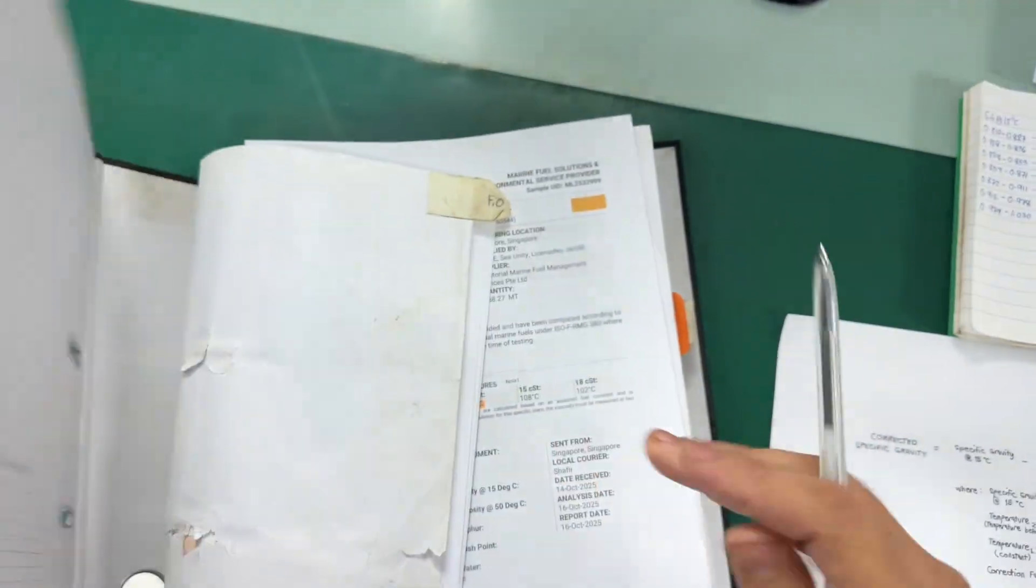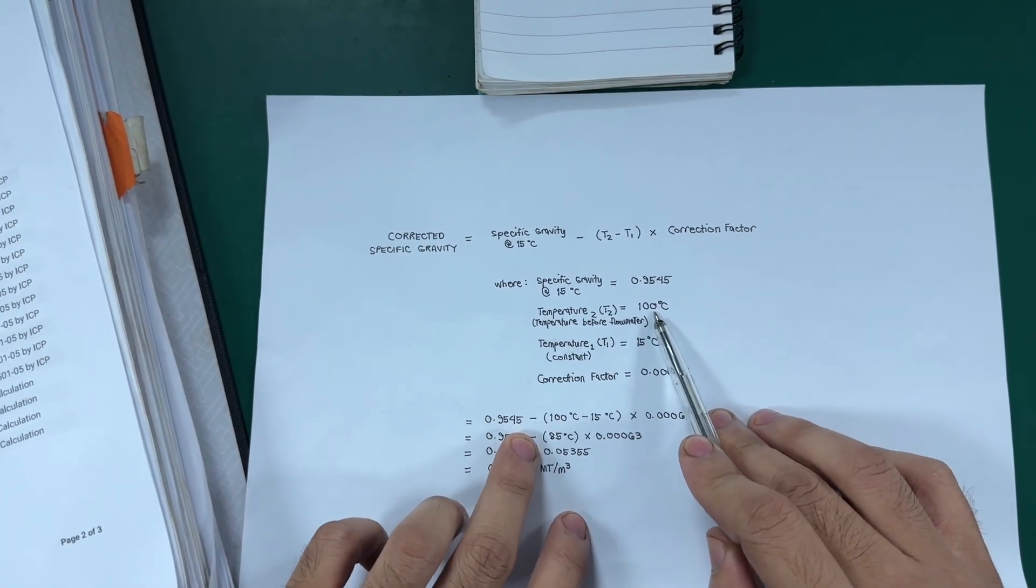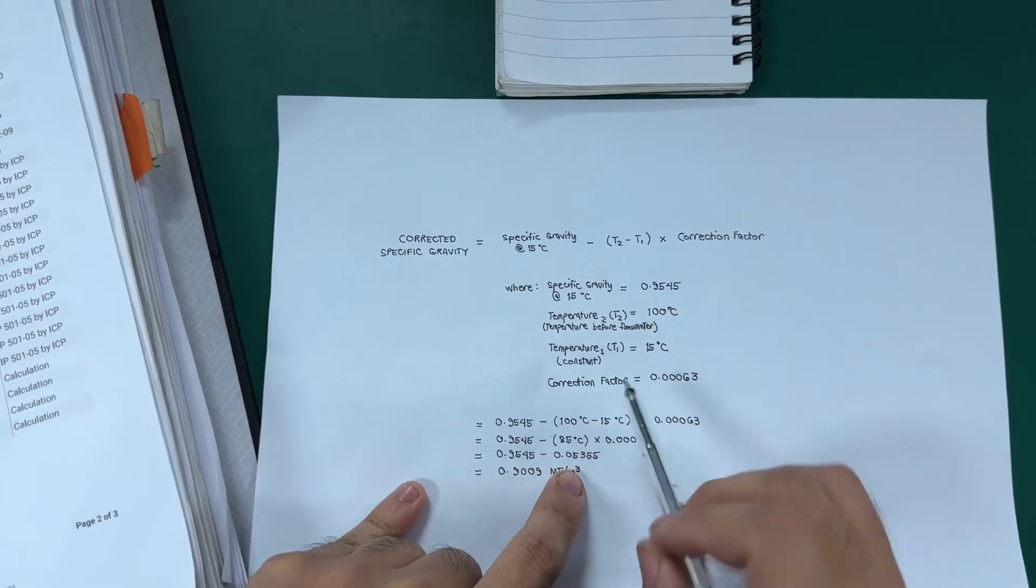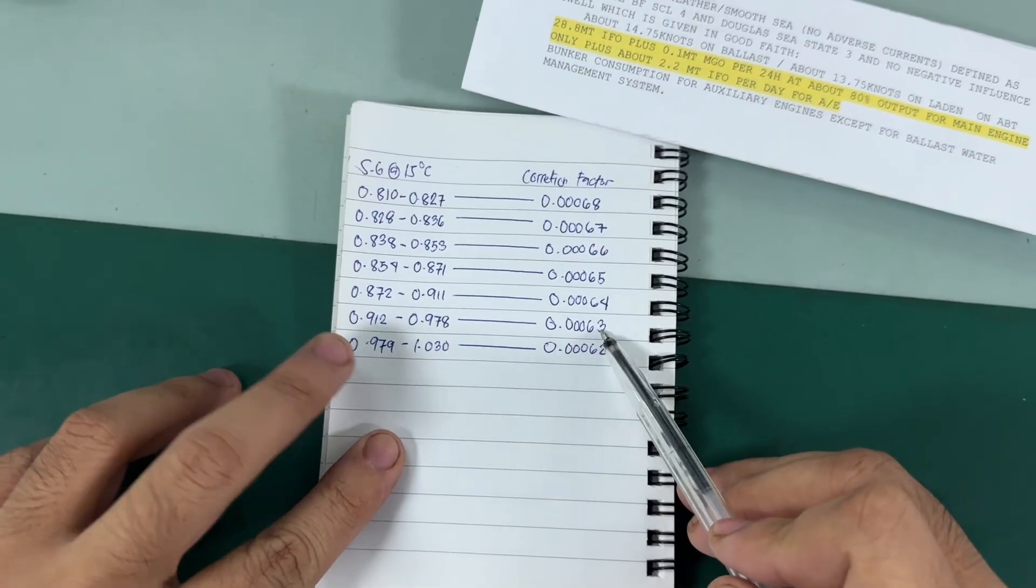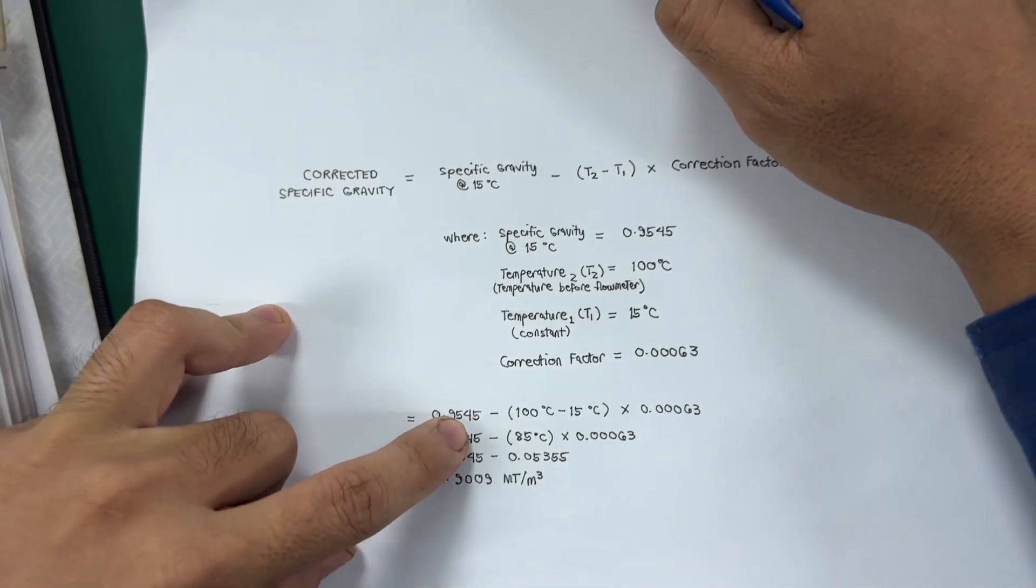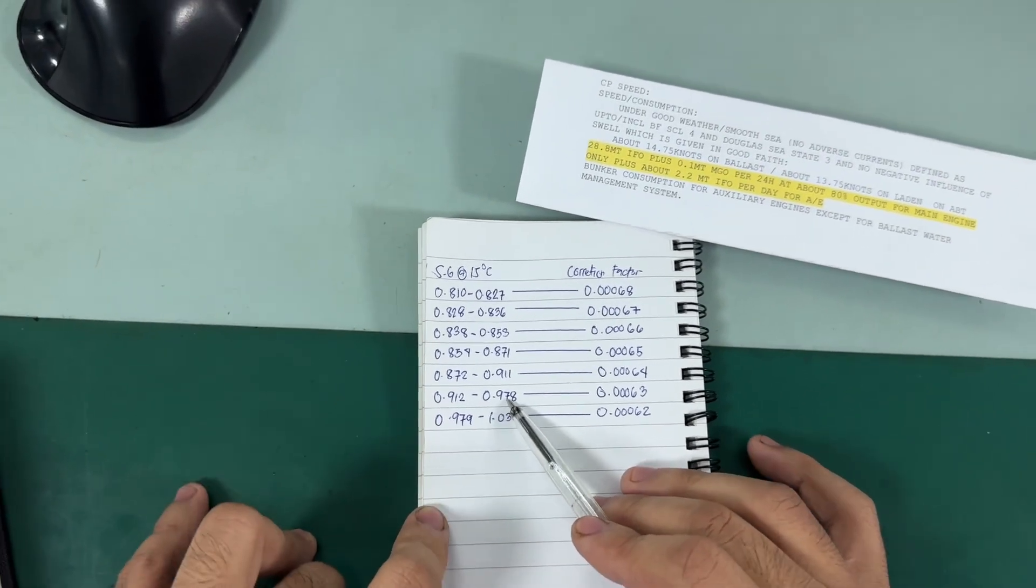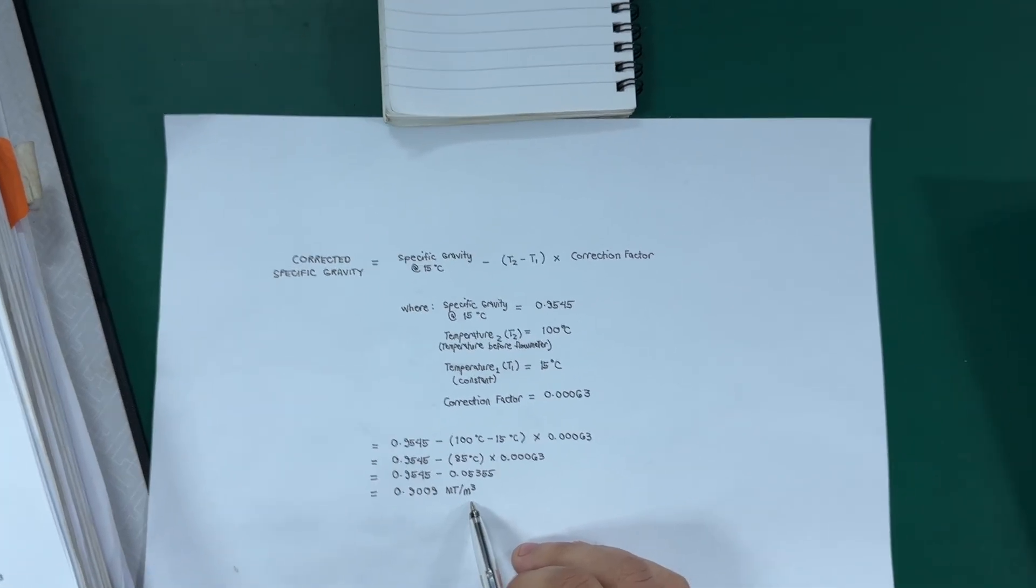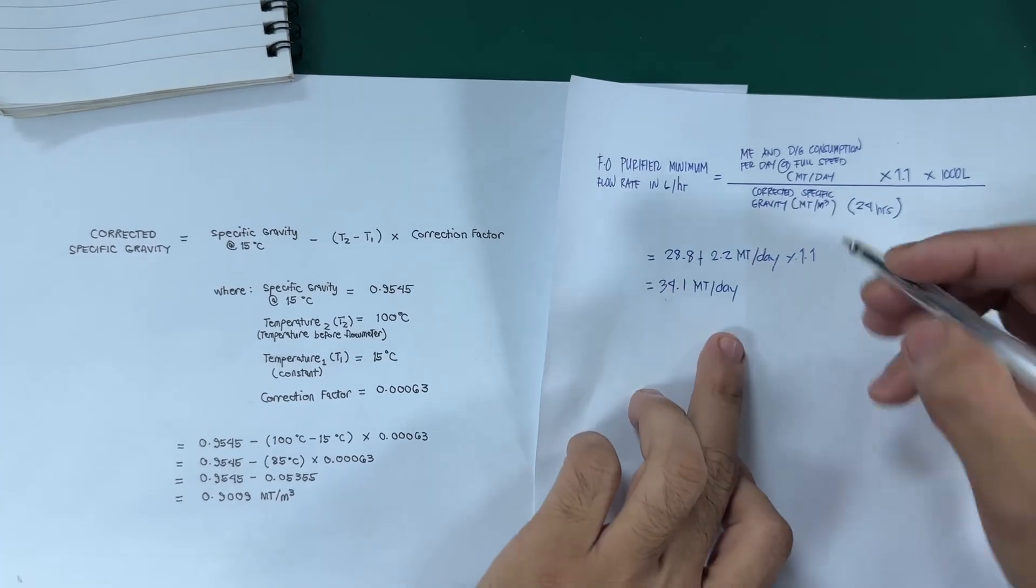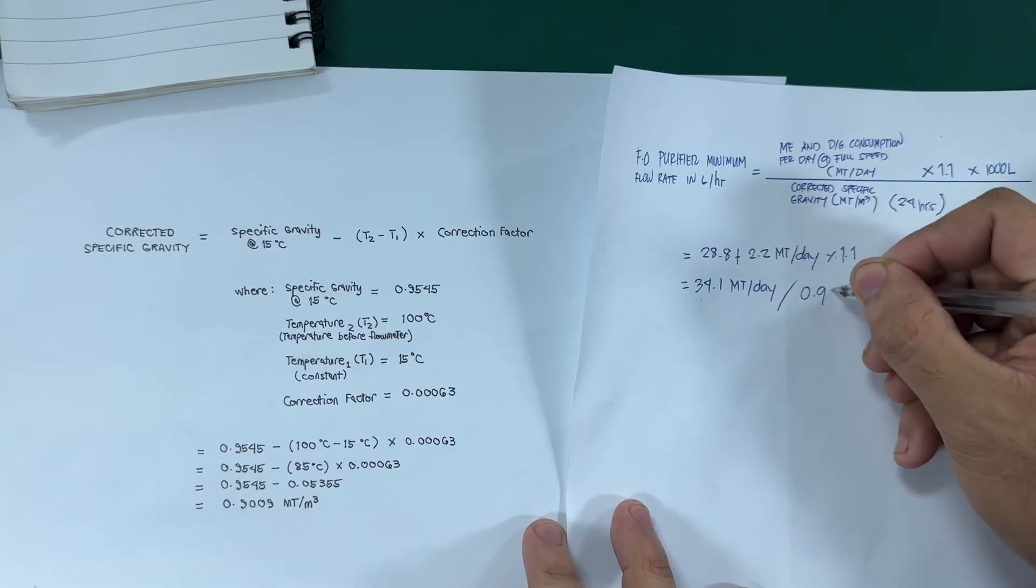So here, 0.9545 minus T2 minus T1 15 degrees which is constant times to the correction factor of 0.00063. Because the 0.9545 is in the middle of 0.912 to 0.978. The result is 0.9009 metric tons per cubic meter. So, 34.1 metric tons per day divided by the result of the corrected specific gravity 0.9009.